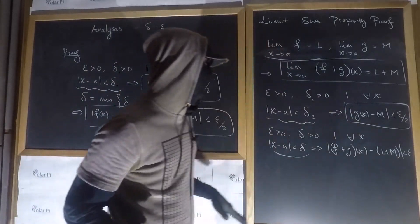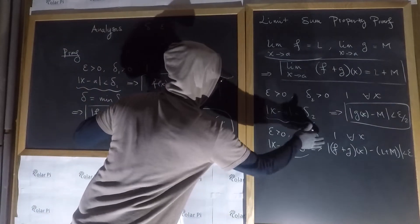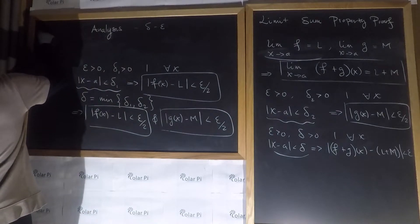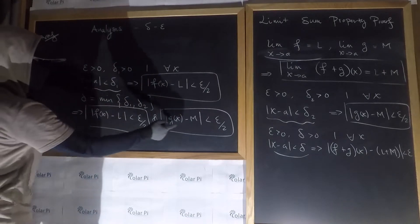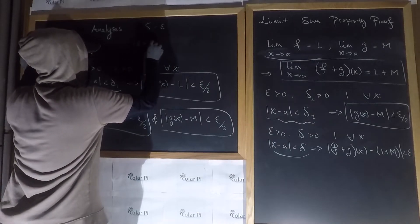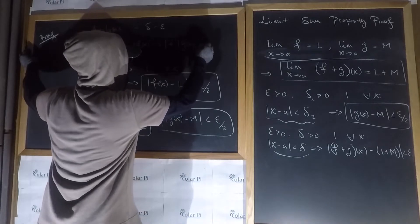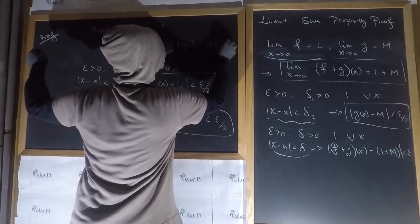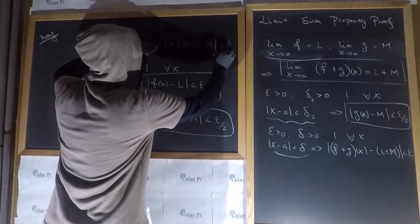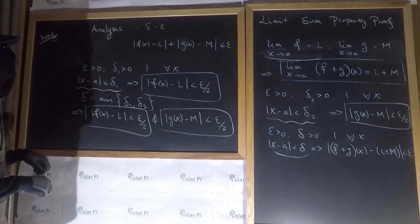This is where we want to end up. We can get there because we know both conditions hold. Since |f(x) - L| < ε/2 and |g(x) - M| < ε/2, the sum |f(x) - L| + |g(x) - M| must be less than ε/2 + ε/2, which is just epsilon.